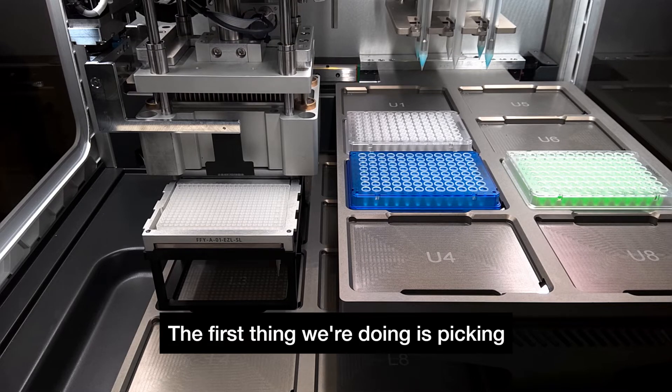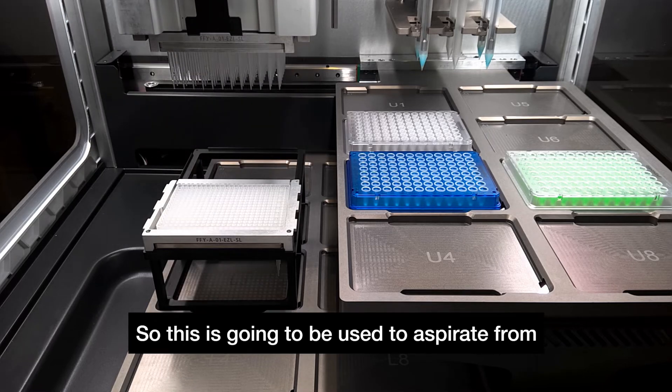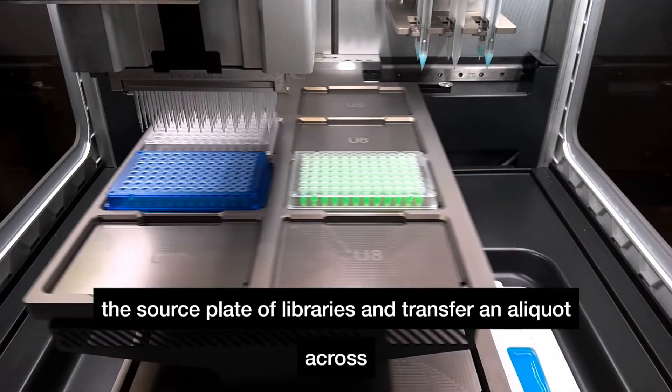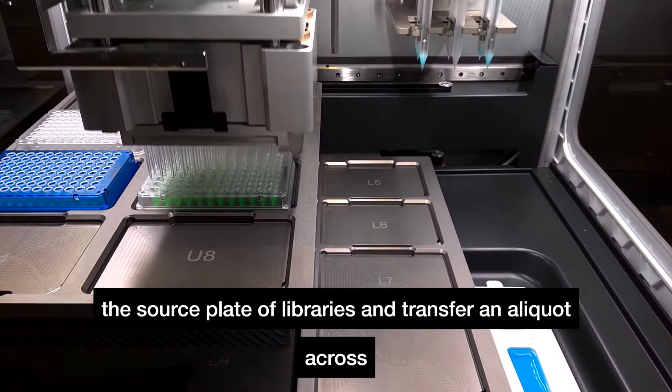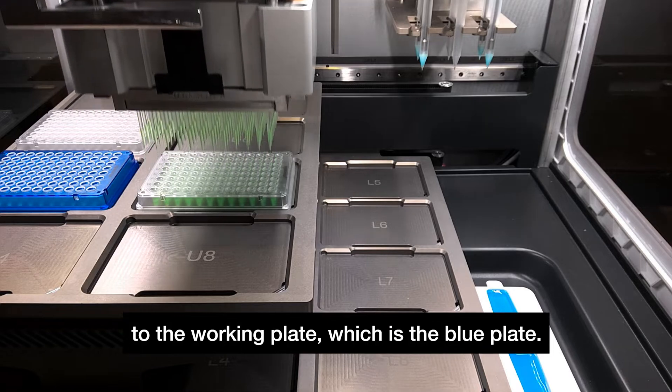The first thing we're doing is picking up a set of 96 tips. This is going to be used to aspirate from the source plate of libraries and transfer an aliquot across to the working plate which is the blue plate.